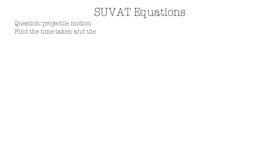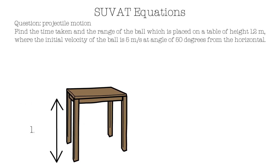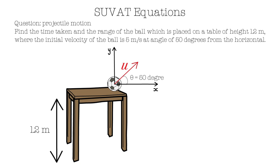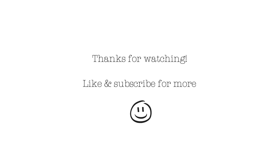Now for a question. Find the time taken and the range of the ball placed on a table of height 1.2 meters, given that the initial velocity is 5 meters per second at an angle of 50 degrees from the horizontal. This means it has both x and y components. Using everything we've just gone through, can you show that the time of flight is 1.02 seconds and the range is 3.28 meters? Pause the video, have a go and see if you get the same answer. If you are unsure about something or have a question, please leave a comment below. Well, that's it for this video — thank you for watching, please like and subscribe for more.